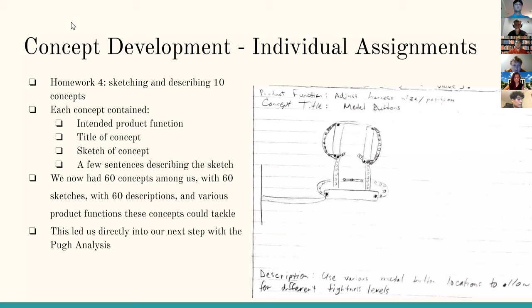Homework four also required us to produce more concepts individually. We were asked to name the product function, develop a sketch of the concept, and add a title. All together, we created 60 concepts, which we narrowed down with the help of the Pugh analysis.